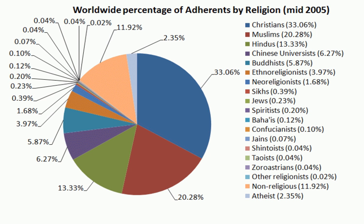An early and influential work in the area that set the trend for Hindu interpretations of archaeological evidence from the Harappan sites was that of John Marshall, who in 1931 identified the following as prominent features of the Indus religion: a great male god and a mother goddess, deification or veneration of animals and plants, symbolic representation of the phallus and vulva, and use of baths and water in religious practice.